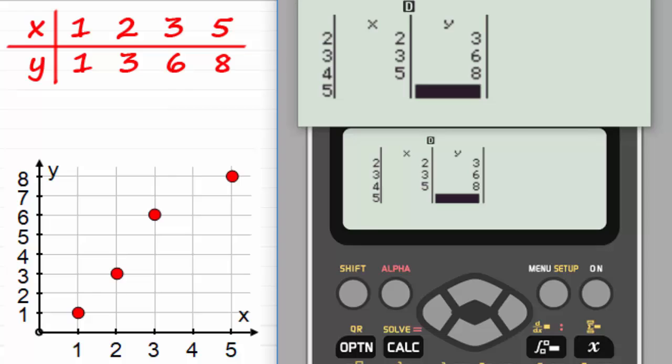You might want to go back and just check that you've got the right values in just by moving the cursor up. You'll see that we've got the correct data entered. All we need to do now is work out the product moment correlation coefficient r.